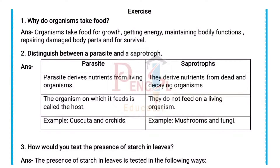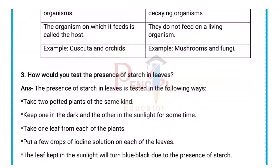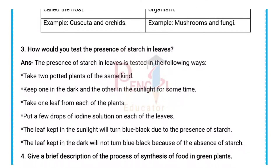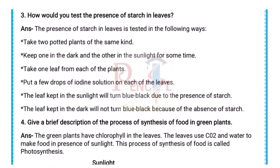Third question: How would you test the presence of starch in leaves? Answer: Take two potted plants of the same kind. Keep one in the dark and the other in the sunlight for some time. Take one leaf from each plant and put a few drops of iodine solution on each of the leaves.